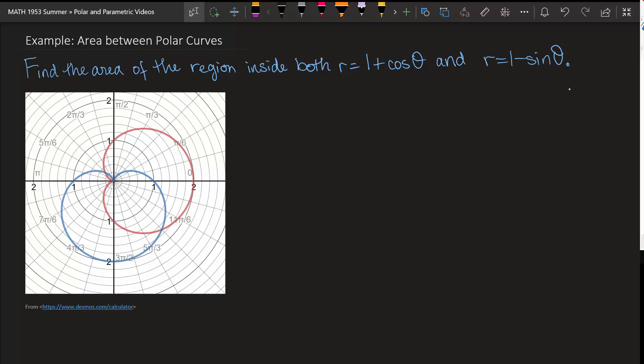Hello. What we're going to work on today is the following problem. Let's consider the area of the region inside both the limaçon r equals 1 plus cosine theta and the cardioid r equals 1 minus sine theta.